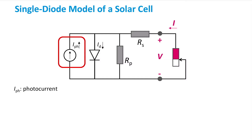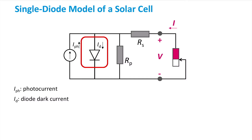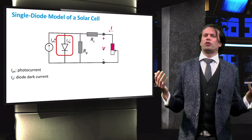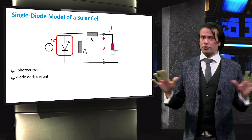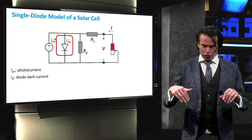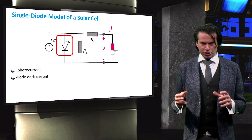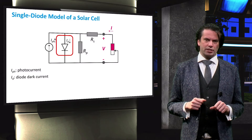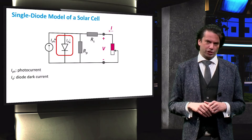Next we see a diode with a current ID passing through it. This represents the solar cell diode characteristics in the dark. You will notice that this current is essentially a sink for the current — some current will pass through the diode, and this current does not reach the load. This actually represents the recombination that occurs in the solar cell, and you will learn a lot about this in the coming weeks in the semiconductor physics videos.